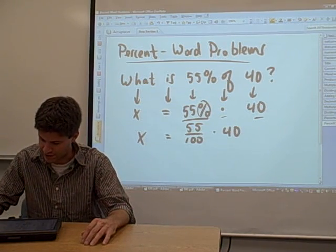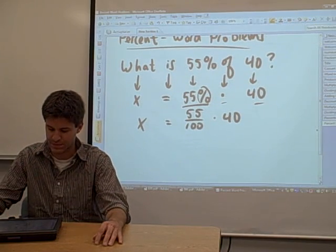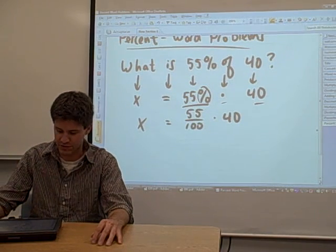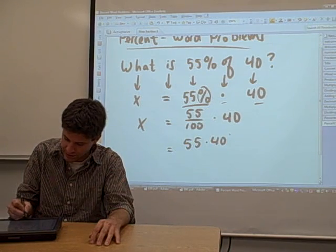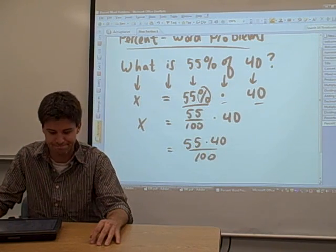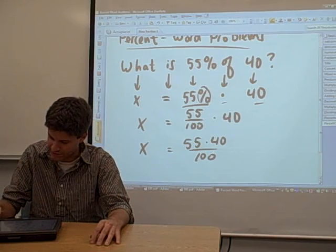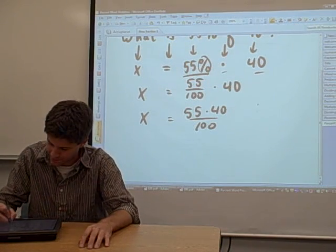And if you're good, you can multiply this thing out like this. What you can do is just multiply these two numbers. What you get is 55 times 40 divided by 100. And that's your answer. So if you like, you can multiply 55 times 40.